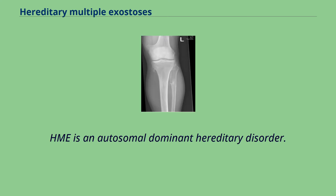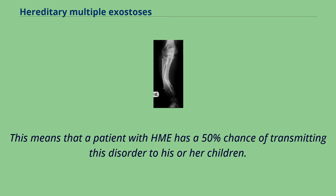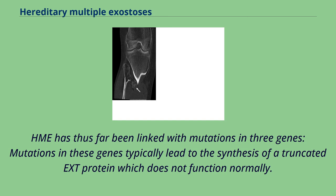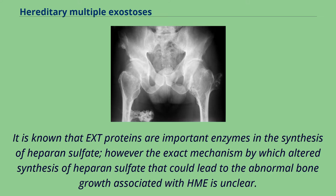HME is an autosomal dominant hereditary disorder, meaning that a patient with HME has a 50% chance of transmitting this disorder to his or her children. Most individuals with HME have a parent who also has the condition; however, approximately 10–20% of individuals have the condition as a result of a spontaneous mutation and are thus the first person in their family to be affected. HME has been linked with mutations in three genes, and these mutations typically lead to the synthesis of a truncated EXT protein which does not function normally. EXT proteins are important enzymes in the synthesis of heparan sulfate.